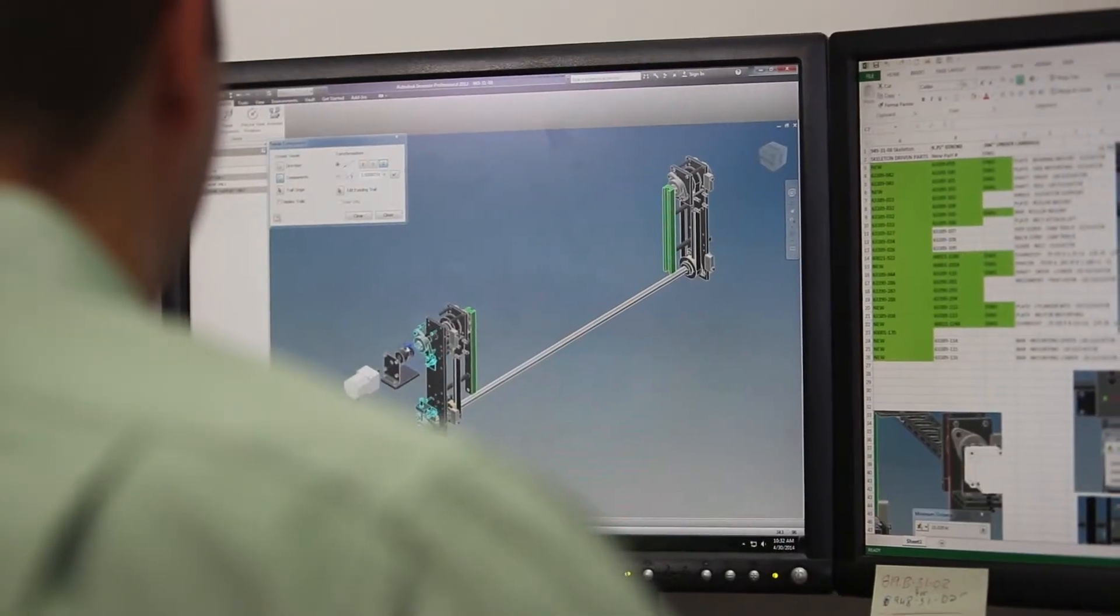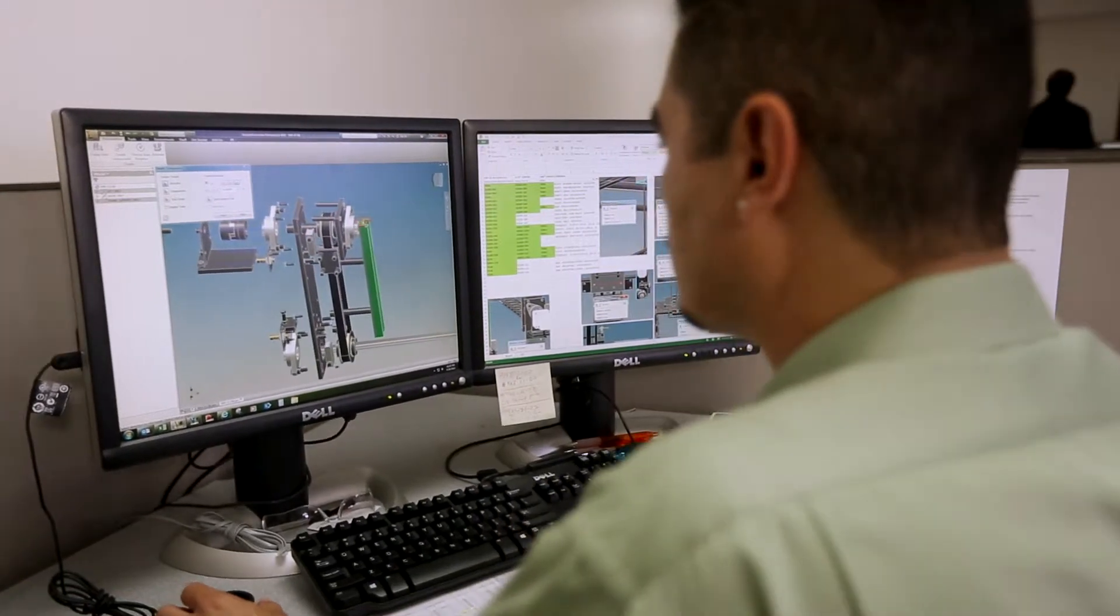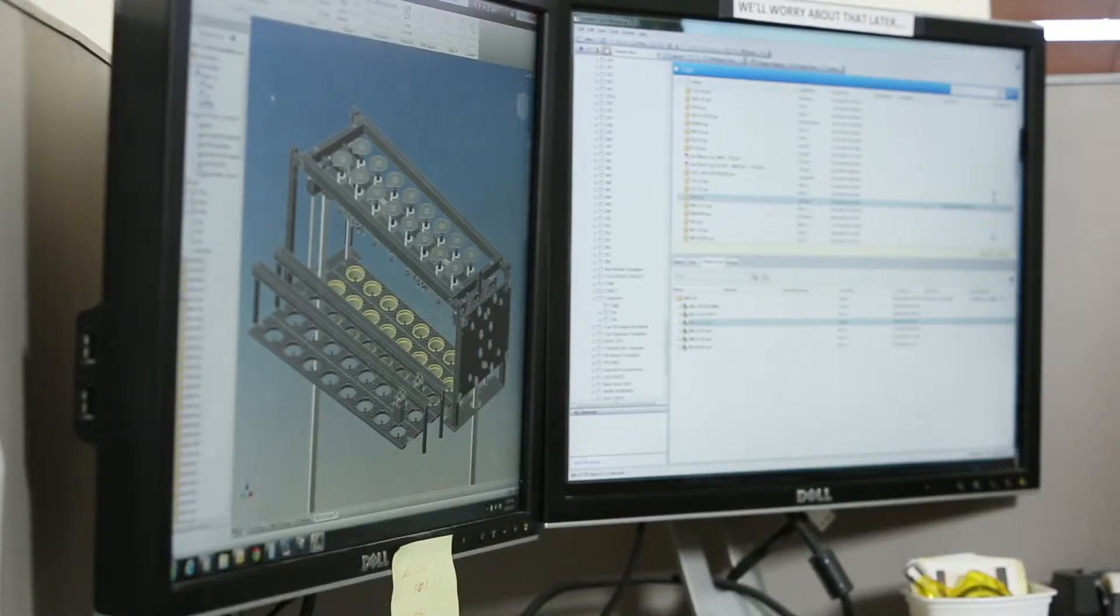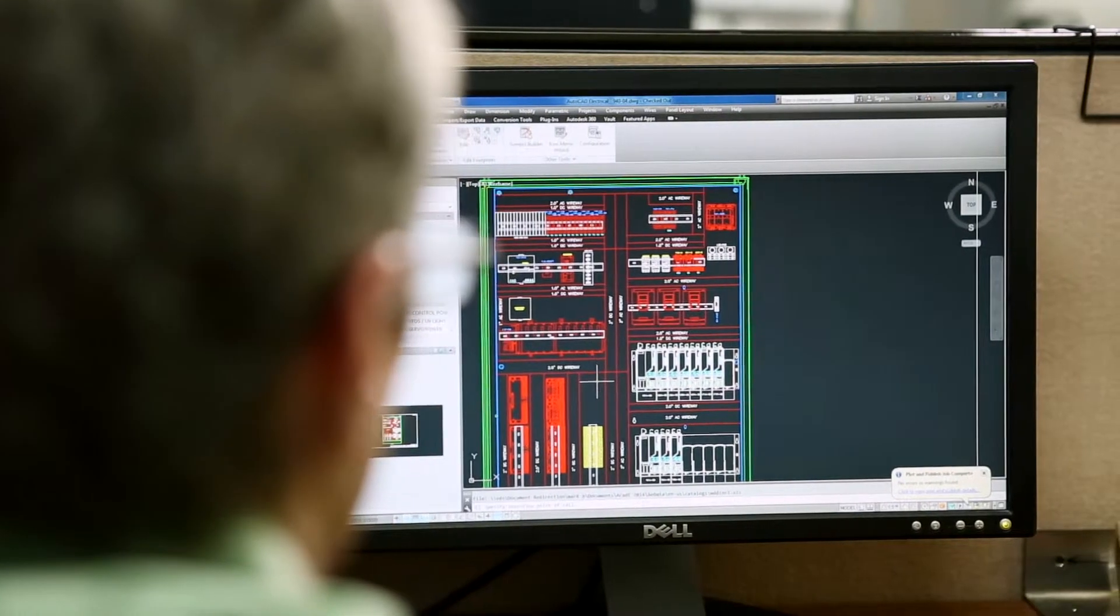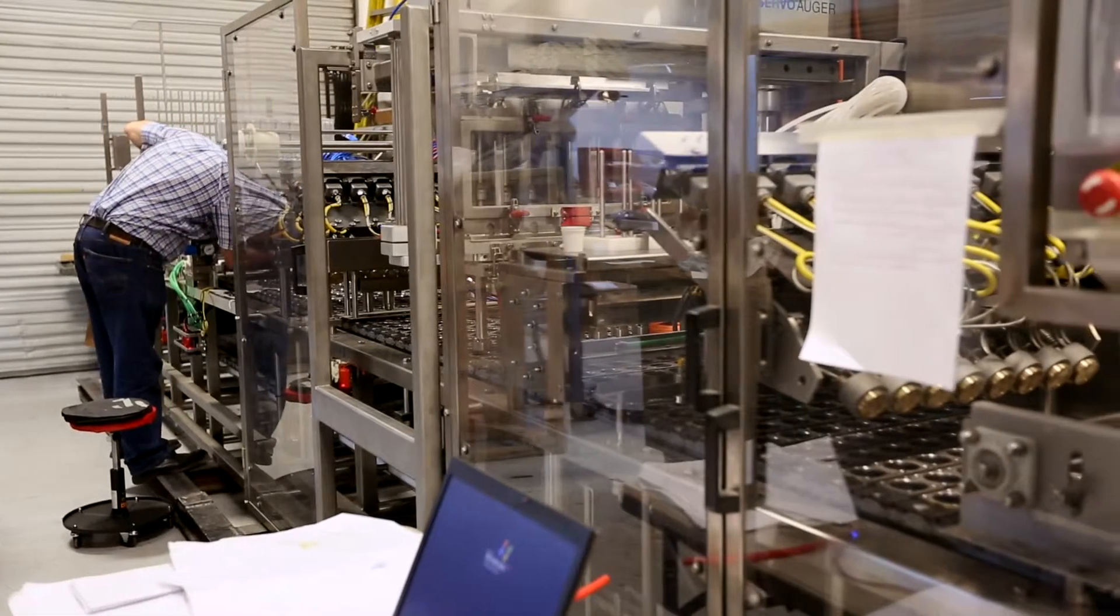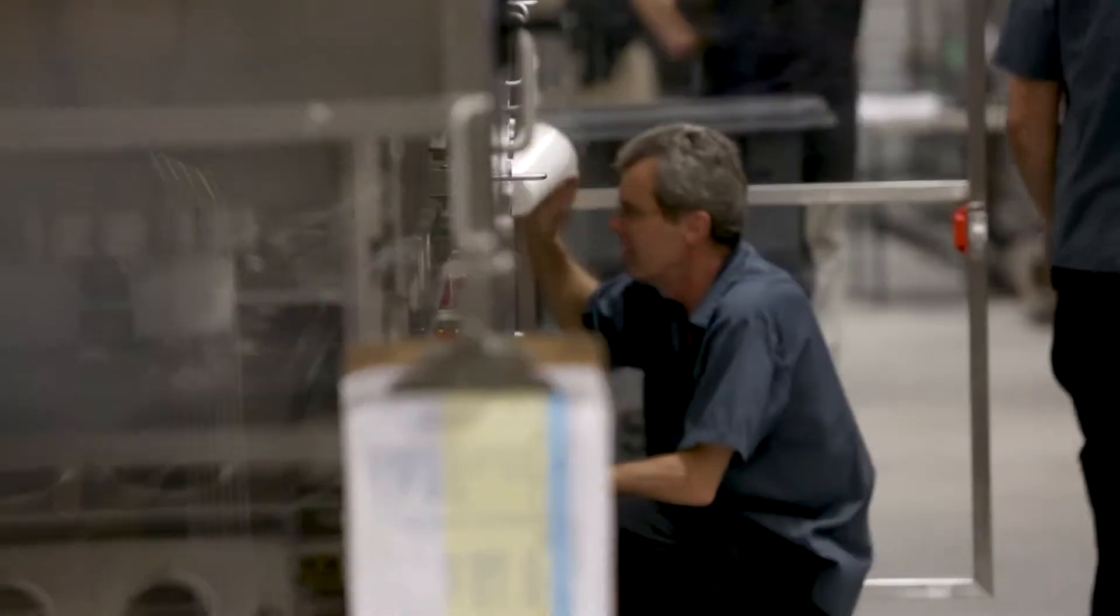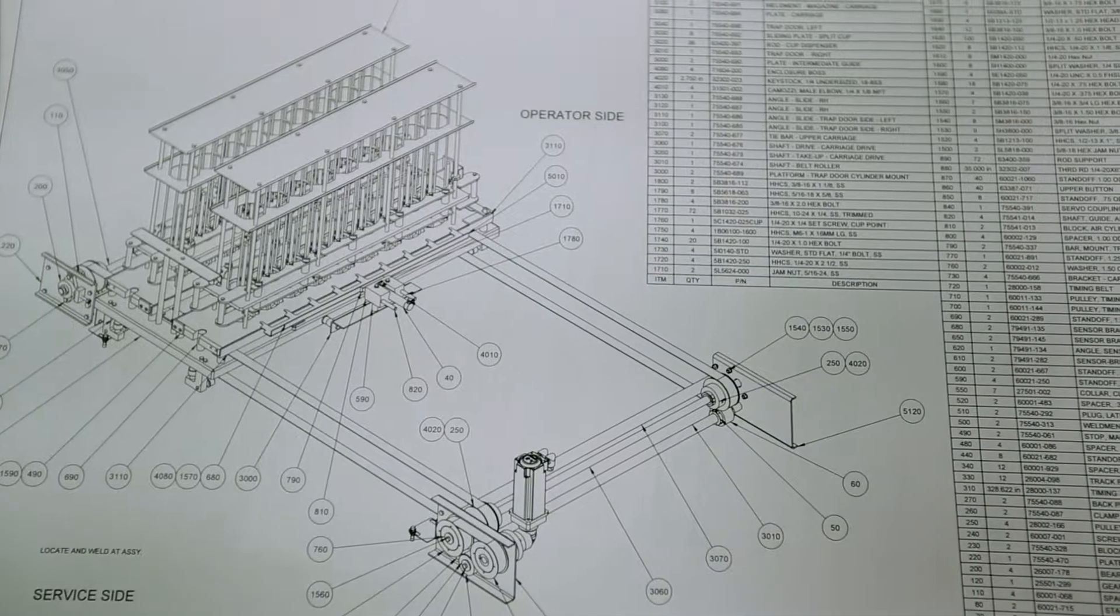Our manuals now are so much better than before. The software has helped us because we're able to put exploded views in of all the sub-assemblies. It's a really nice feature because when a maintenance guy in a plant is wanting to repair his machine, he can visually see it and it's wonderful.